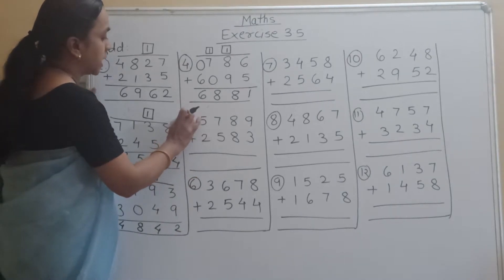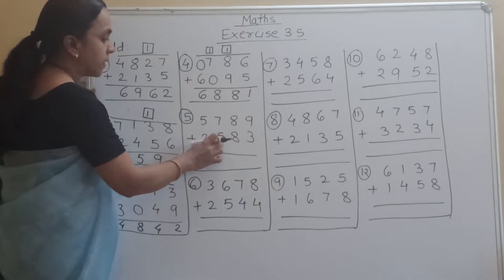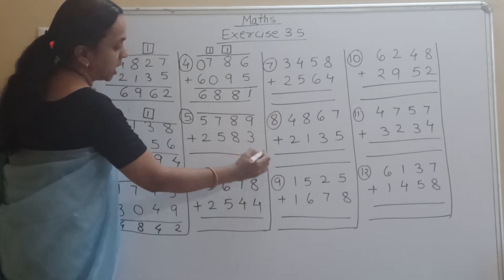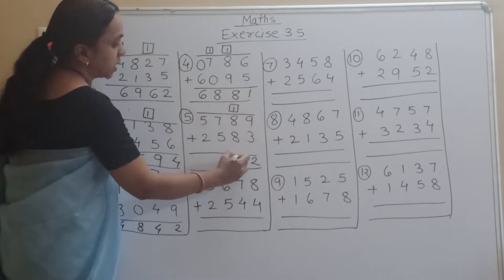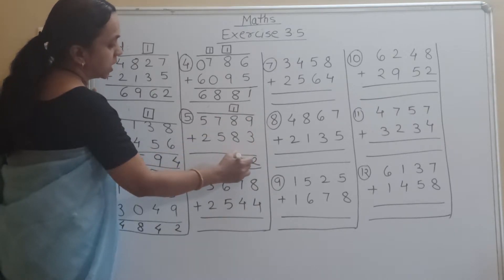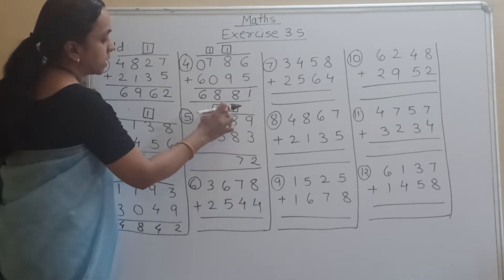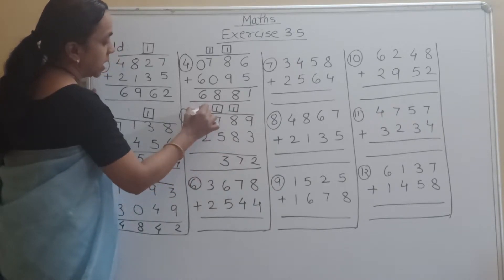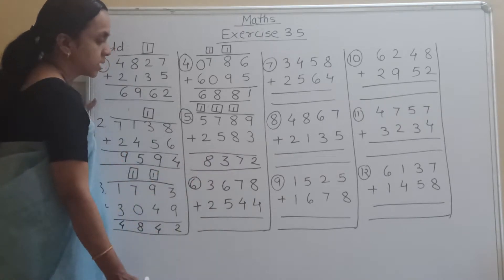The fifth example is 5789 plus 2583. So 9 plus 3 is 12, carry 1. Then 8 plus 8 is 16, 16 plus 1 is 17. Write down 7, carry 1. Then 7 plus 5 is 12, 12 plus 1 is 13. Write down 3, carry 1. Then 5 plus 1 is 6, 6 plus 2 is 8. Our answer is 8372.